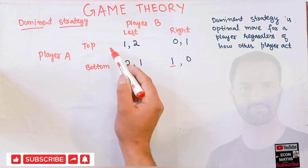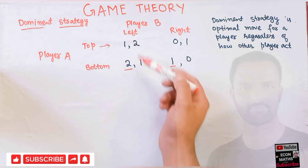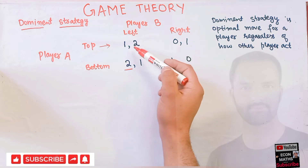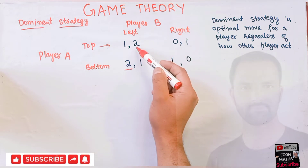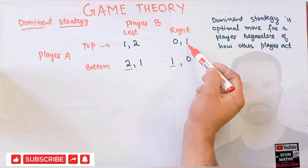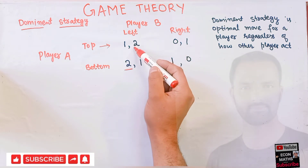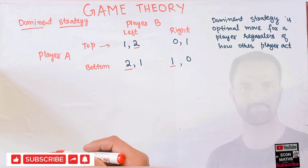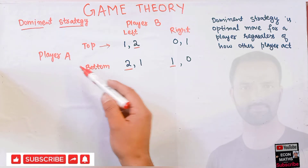Now let us see what happens when player A chooses top. If player A chooses top, player B has two options: either to go left or to go right. Going left gives him two as payoff and going right gives him one as payoff, so player B is better off if he chooses left.